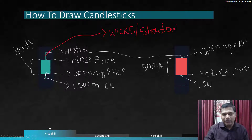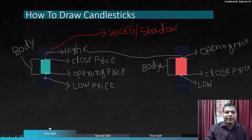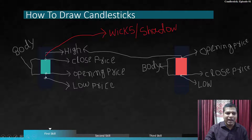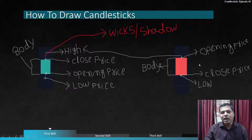On the lower side, the wicks represent the low price of the candle. So the four components are: open, close, high, and low — O, H, L, C. The length from opening to closing is called the body, and the lines above and below the body are called the wicks or shadow.